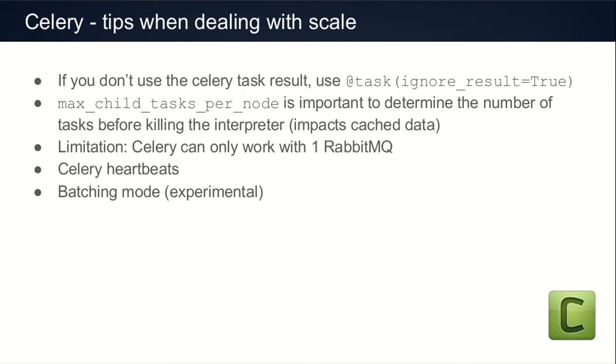Another limitation is that Celery can only work with one RabbitMQ. Since we had issues when trying to scale RabbitMQ and wanted to use several instances for different sorts of tasks, it's not supported. We started by writing some additional code to do that over Celery, which is not very easy. Another interesting property of Celery is that all the nodes talk to each other through Rabbit, sending heartbeat messages to make sure they're still alive. When you have a lot of tasks, it's very chatty, so you need to make sure your RabbitMQ has enough capacity to handle those heartbeats.